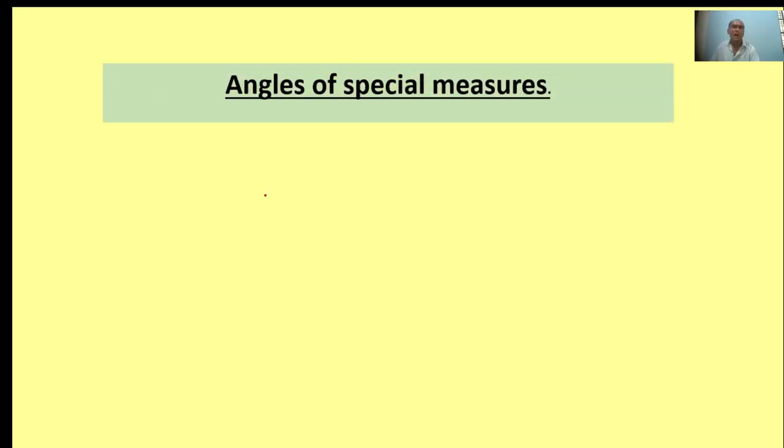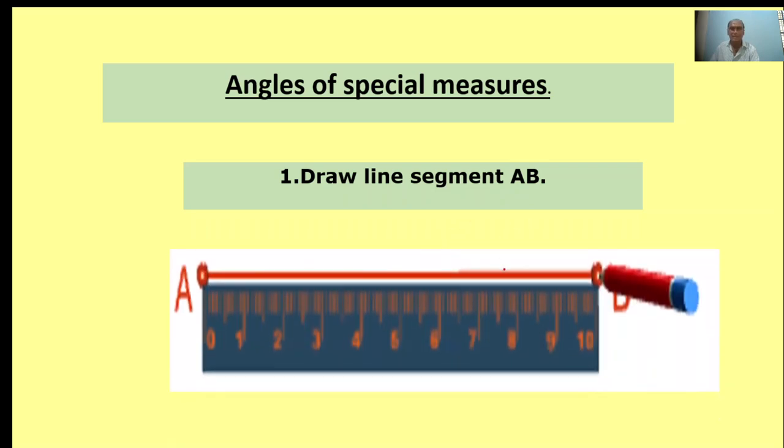Angles of special measures. The special measures are 120 degrees, 90 degrees, 60 degrees, and 30 degrees. First, draw a line segment AB.